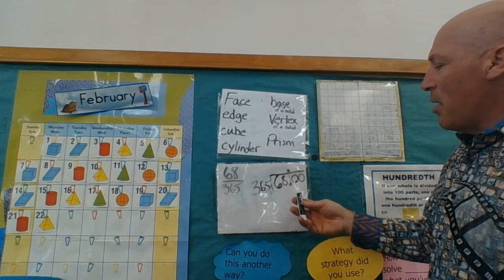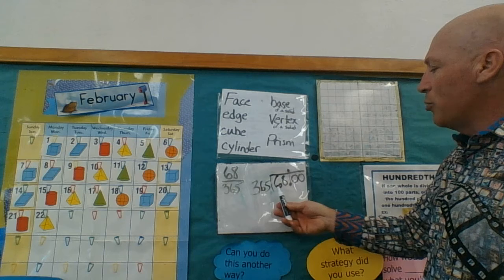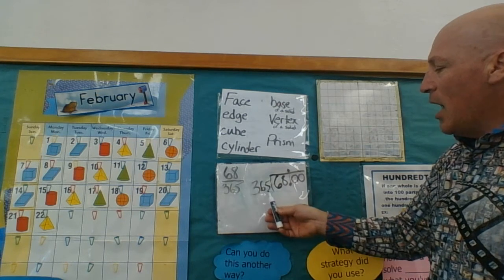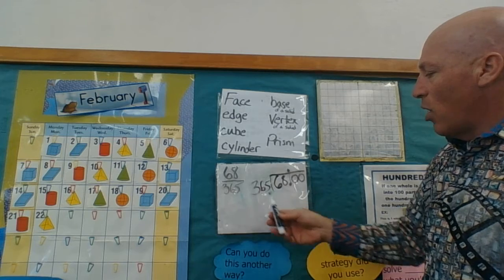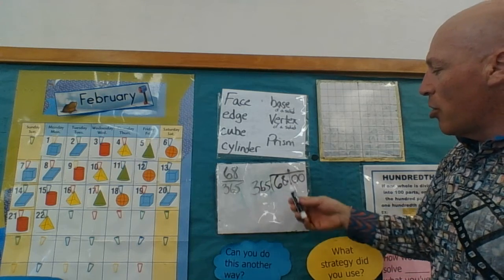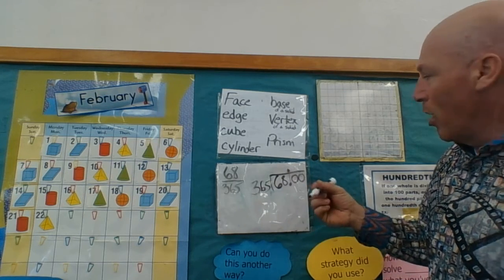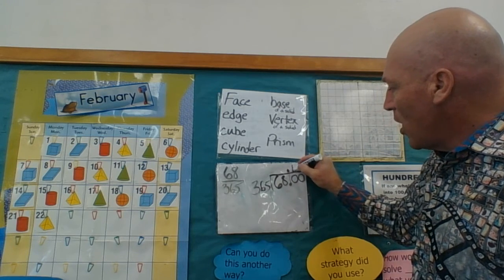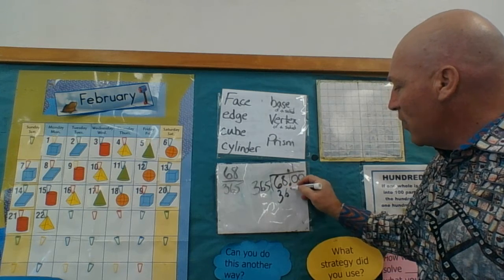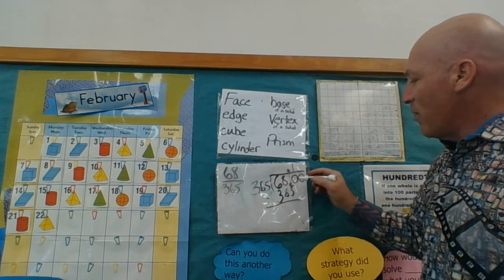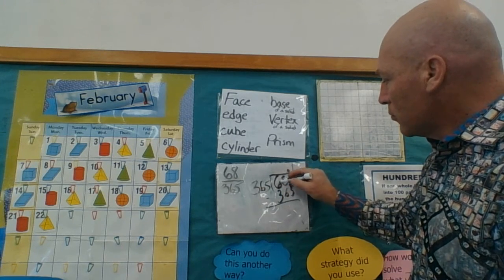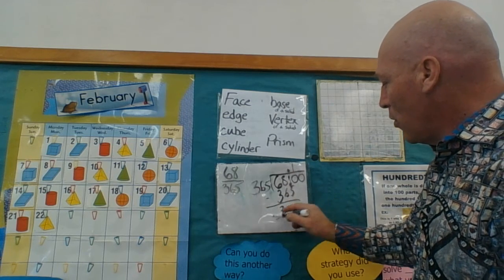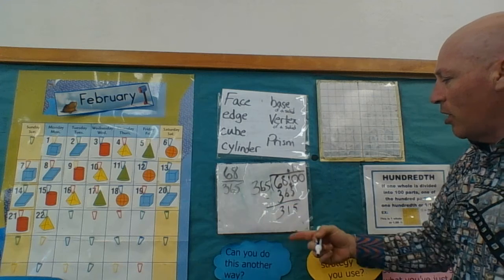I'm going to estimate my solution. This rounds pretty close to 700, and this rounds pretty close to 400. Well, how many times does 400 go into 700? That would just be one. I don't even need to do it on the side — I just know that one times 365 is 365. Now I subtract, and I get 315.